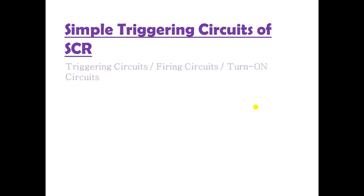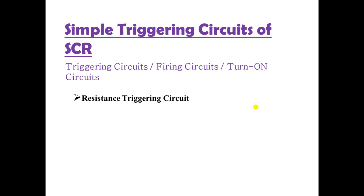A triggering circuit, or firing circuit, or turn-on circuit is used to turn an SCR on. We have seen the resistance triggering circuit, but its disadvantage was that the firing angle was limited to a range of 0 to 90 degrees — it could not go beyond 90 degrees. To overcome that disadvantage, an RC triggering circuit is used, which includes both resistance and capacitance.